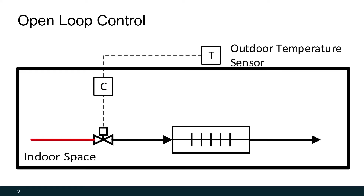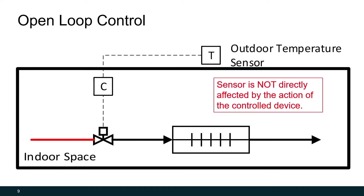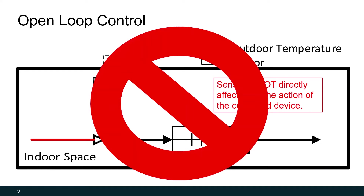Here is an example of open loop control. In open loop control, we're heating a space with a hot water heat exchanger, but the temperature sensor has been moved outside of the building — it's measuring the outdoor temperature, not directly measuring our controlled variable, which is indoor space temperature. We really want the indoor space to be warm, not the outside. Open loop control has its place, but it's not usually recommended because you're not directly measuring the variable.